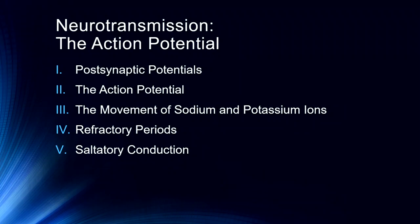We're going to start first with a quick overview of postsynaptic potentials — excitatory and inhibitory postsynaptic potentials — then talk about the action potential itself, a summary of the movement of sodium and potassium ions throughout this process, refractory periods, and then we'll finish with saltatory conduction, by which this process is sped up through covering the axon with the myelin sheath — via oligodendrocytes in the central nervous system and Schwann cells in the peripheral nervous system.